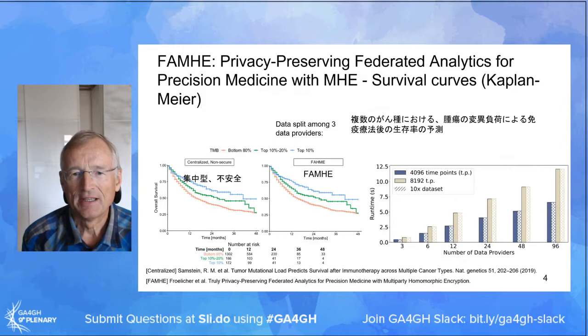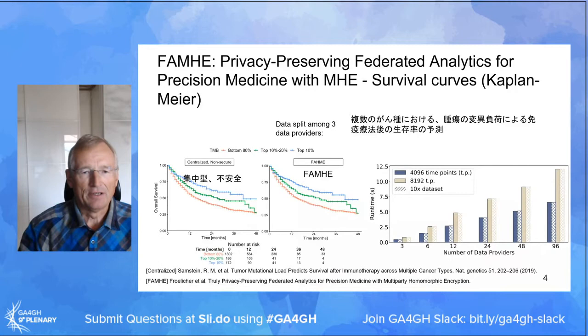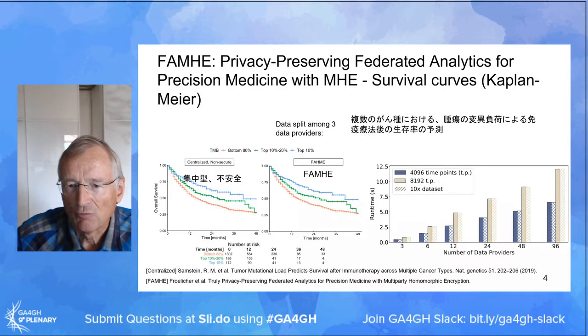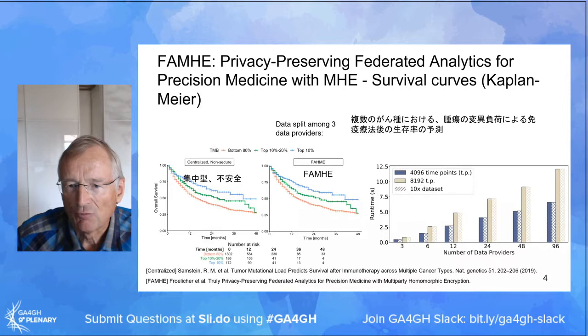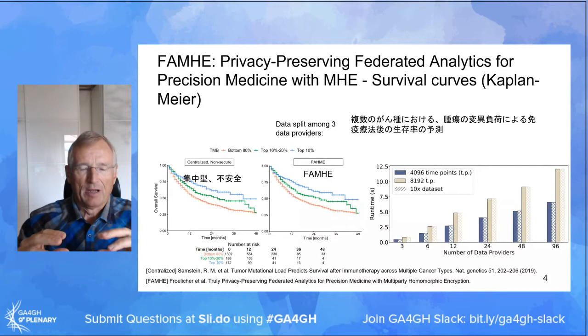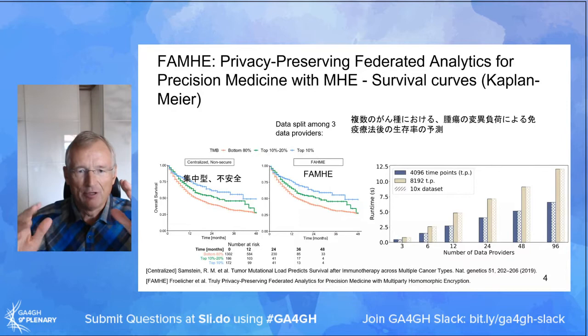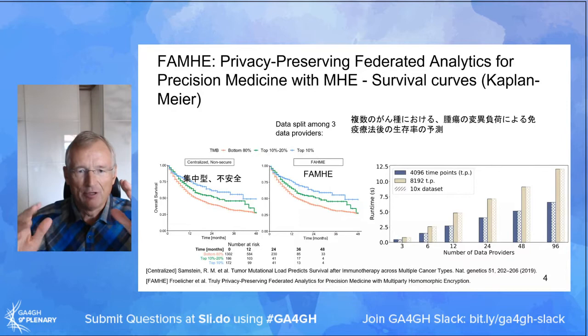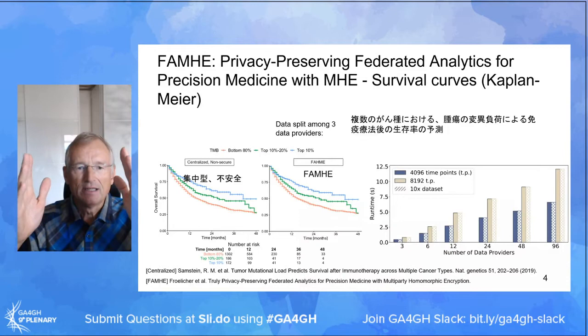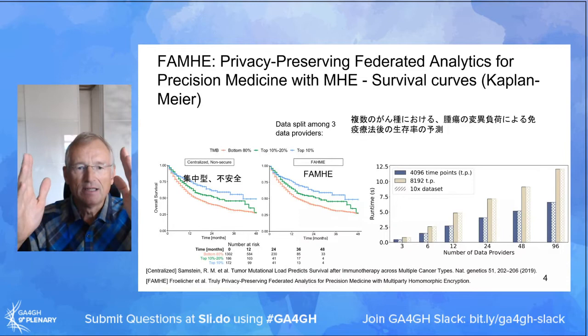What we've shown is that we've taken existing studies — here for example a GWAS that was published in Nature Genetics two years ago. The original study was centralized with all the data in clear text. We artificially chunk that data set into, for example, three parts, keep the data separated, and show that it is possible to obtain the same results with the same level of precision without transferring the data. The data remain in their silos where they are.